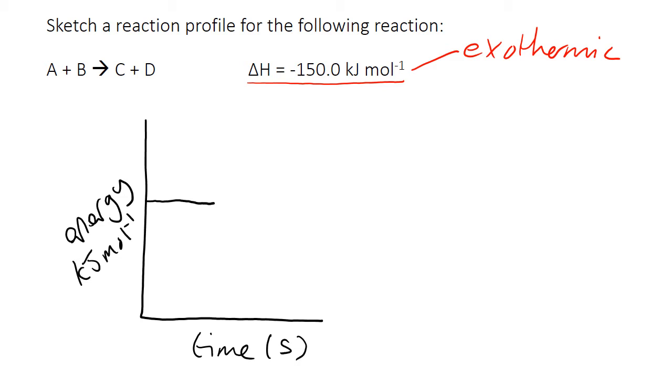I mean to start with our reactants, so that's the first line on our graph. And then we know that because the reaction is exothermic, the delta H is negative, that our products need to have less energy than our reactants. So if this is A plus B our reactants, and these are C and D our products.